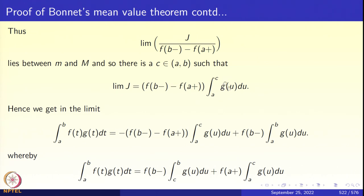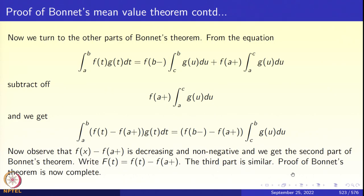Since the function φ was continuous, J divided by (f(b−) minus f(a+)) equals the value φ(c), which is the integral from a to c of g(u) du for some c. Taking the limit, we get the integral from a to b of f(t)g(t) dt equals minus (f(b−) minus f(a+)) times the integral from a to c of g(u) du plus f(b−) times the integral from a to b of g(u) du. Combining the integrals, the integral from a to b of f(t)g(t) dt equals f(b−) times the integral from c to b of g(u) du plus f(a+) times the integral from a to c of g(u) du. That completes the first part of Bonnet's theorem.